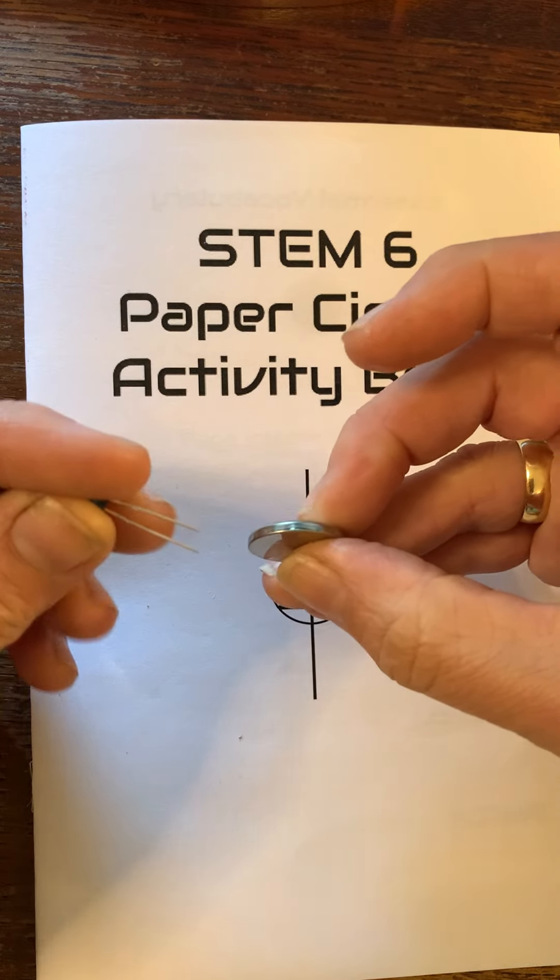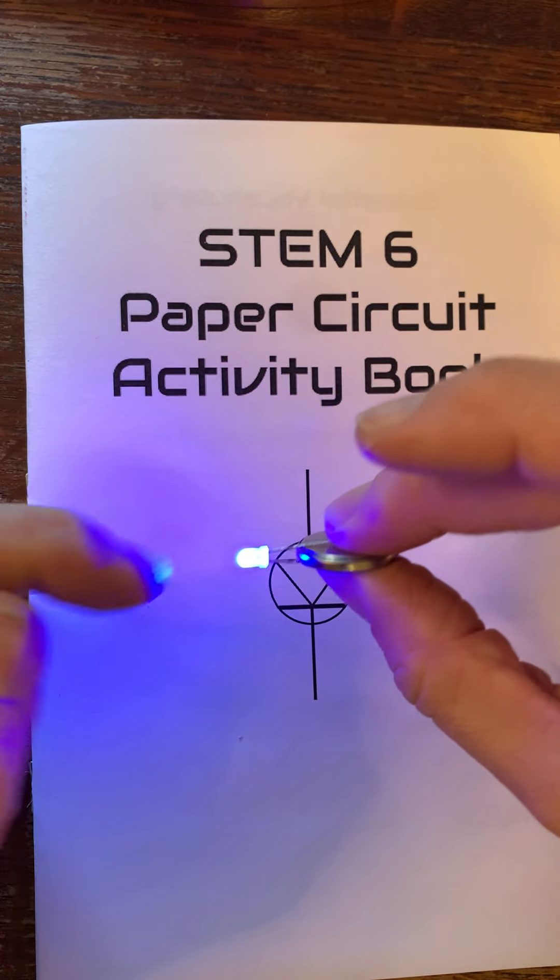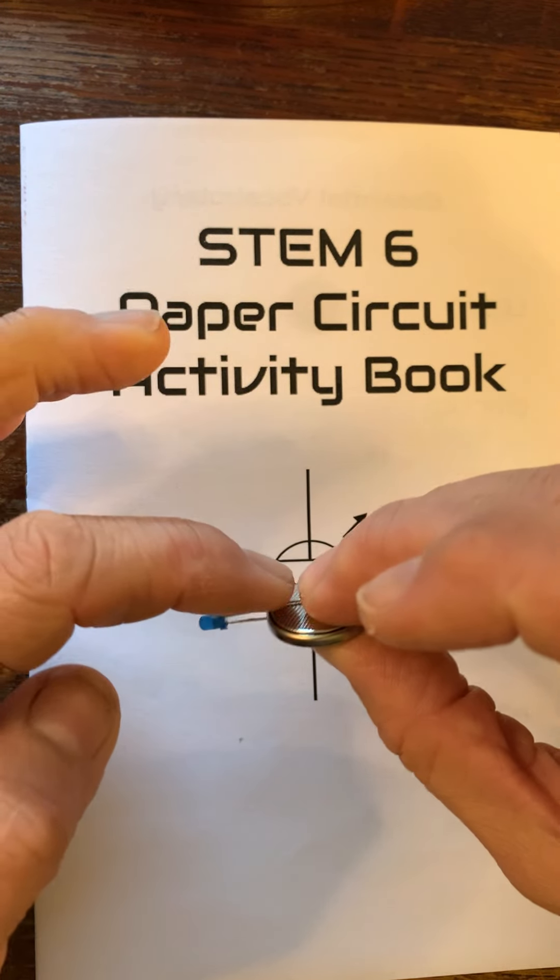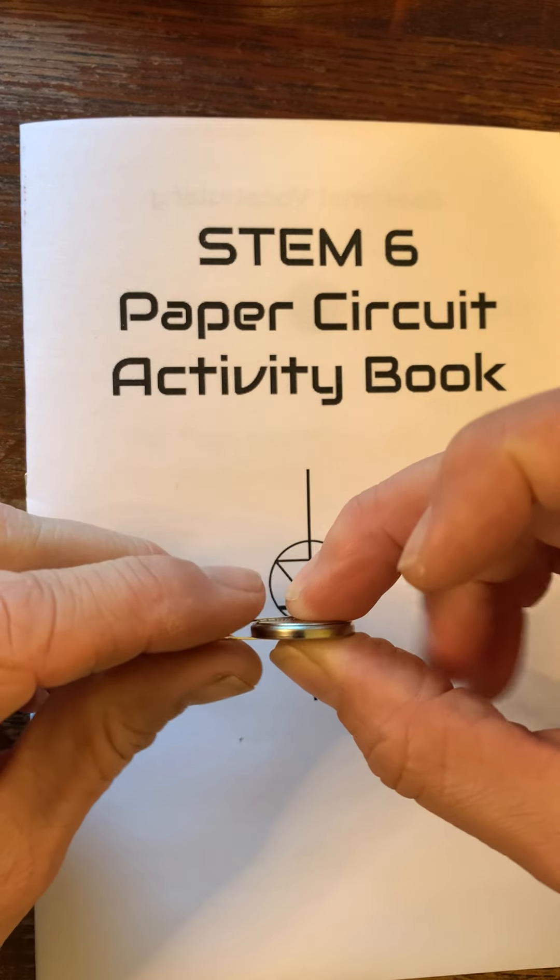So if I put the positive leg on the positive side of the battery and the negative on the negative, the light can flow through. But if I flip it and put the positive side on the negative side of the battery, it doesn't allow any of the light to go through.